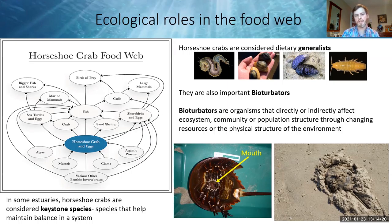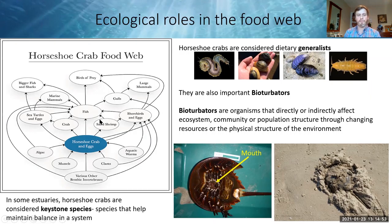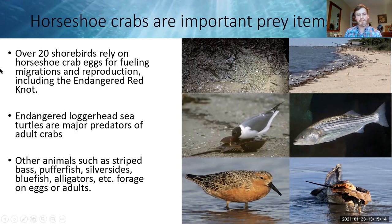In some estuaries, horseshoe crabs are considered keystone species — important for maintaining balance between different links in the food web. They help regulate populations of algae, mussels, clams, and aquatic worms, while also serving as an important food source for fish, shrimp, and shorebirds. Many migratory shorebirds rely heavily on horseshoe crab eggs to fuel their migration and reproduction patterns.